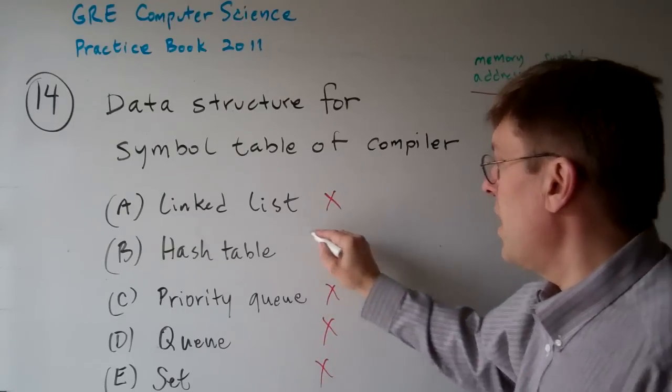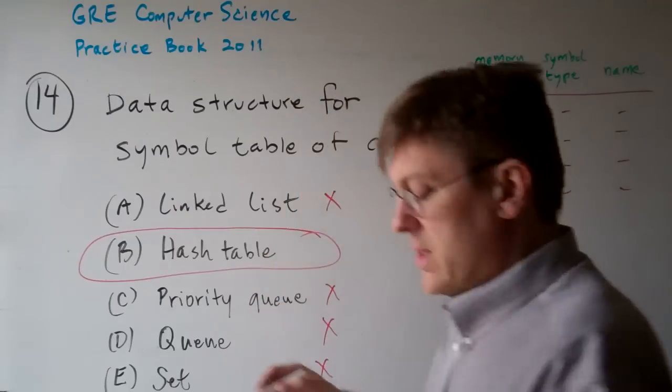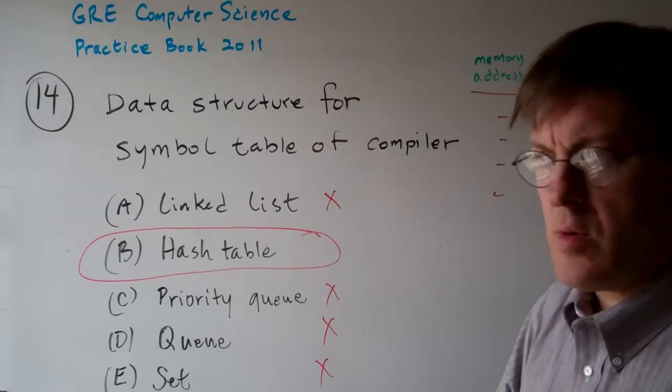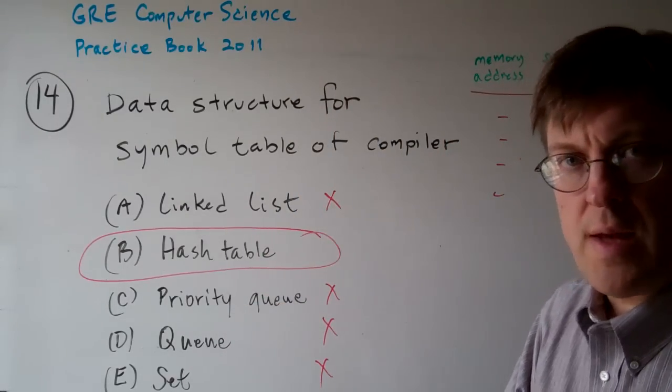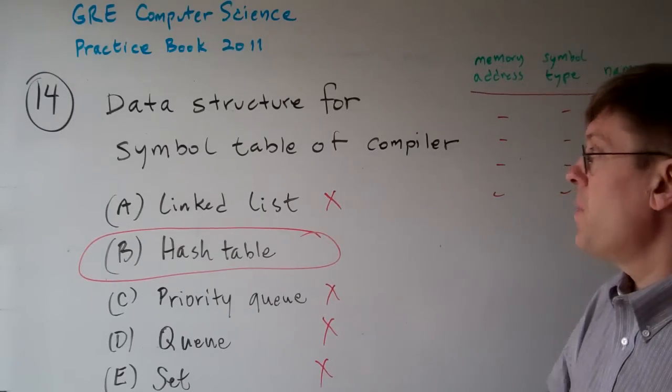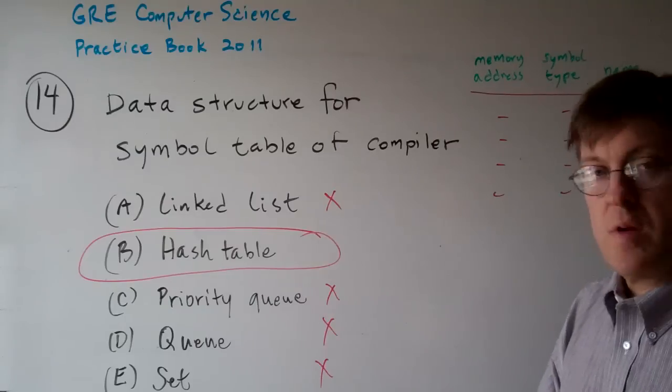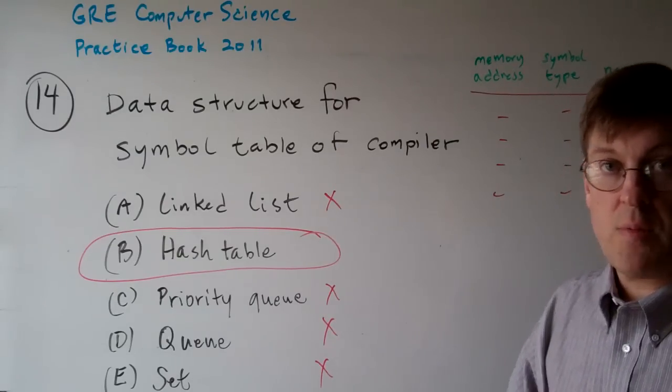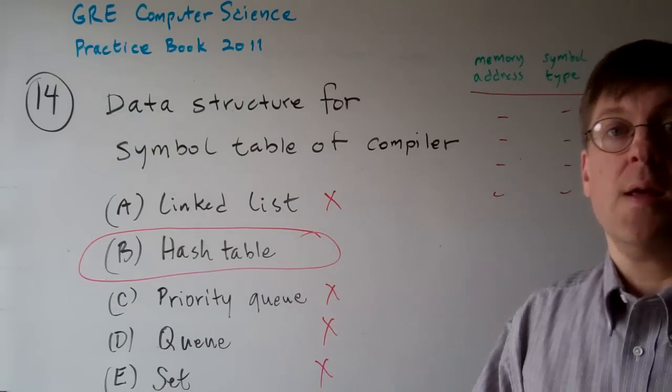A set, I don't even know why they have it on there. I guess if you took any operating systems or compilers classes you should probably run across that. You just kind of have to know that the symbol table is set up as a hash table. So the answer to 14 is B.